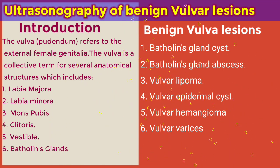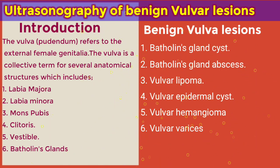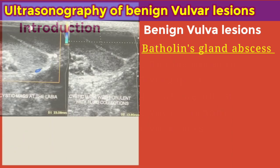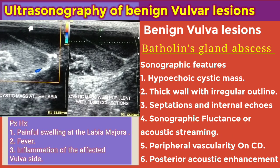The benign vulva lesions we'll be looking at are the Bartholin's gland cyst, Bartholin's gland abscess — which is a complication of Bartholin's gland cyst — vulva lipoma, vulva epidermal cyst, vulva hemangioma, and vulva varices. We're going to look at the sonographic features of these benign vulva lesions, starting with Bartholin's gland abscess.